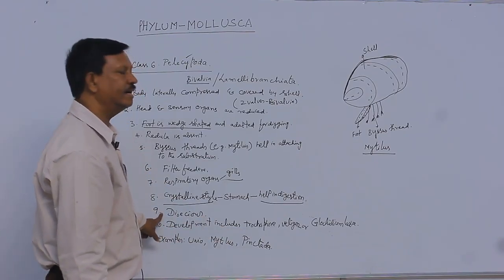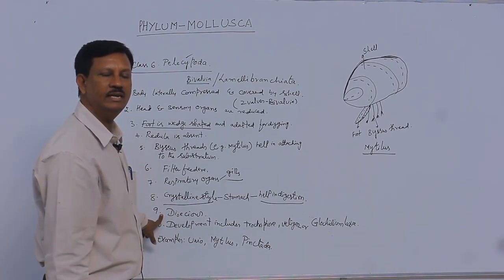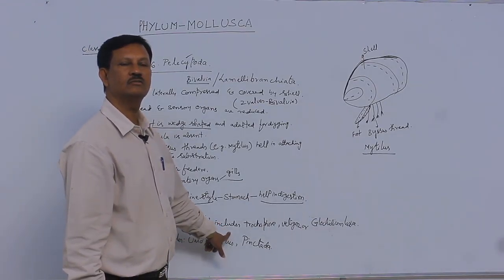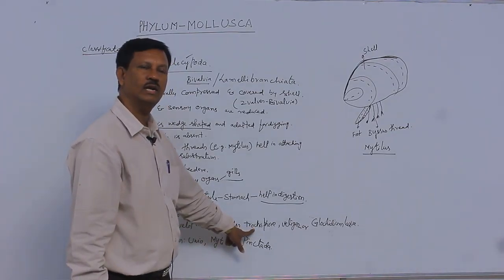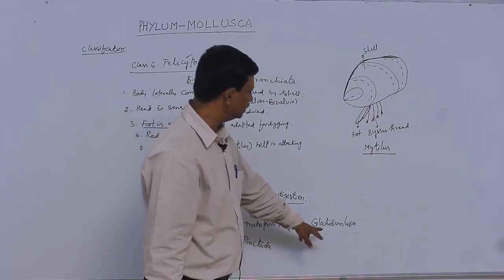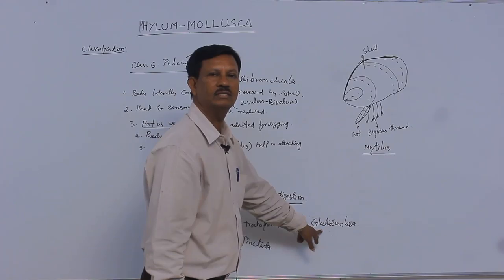They are dioecious animals. Males and females are mostly separate. Development also occurs in groups. There are many larvae including trochophore larva and veliger larva. In addition, in some animals, glochidium larva is also present. It is ectoparasitic, present on the external surface of fishes.